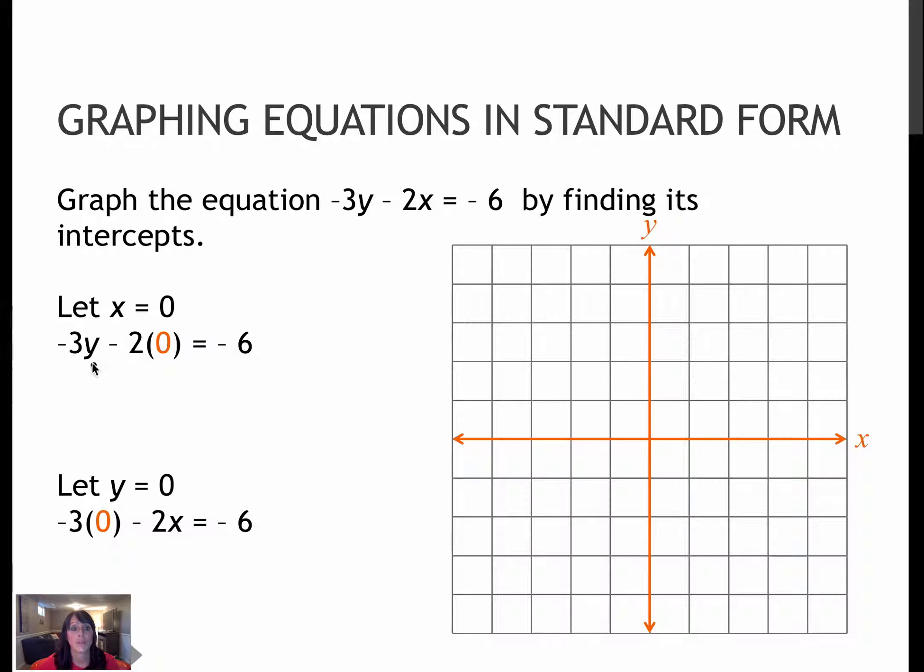In this one, I'm letting x equal 0. So I have -3y - 2(0). Well, 2 times 0 is 0. So I have -3y = -6. And dividing by -3, I get y = 2. What that means is (0, 2) is a point.